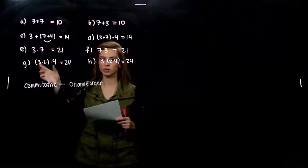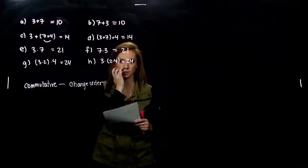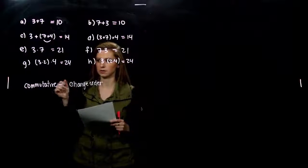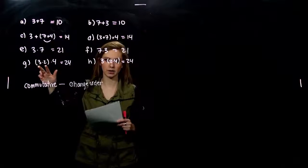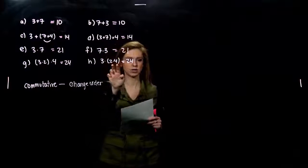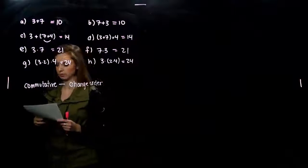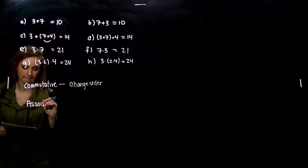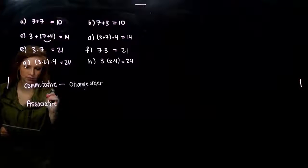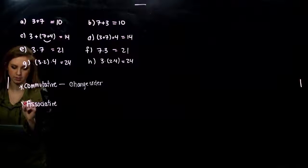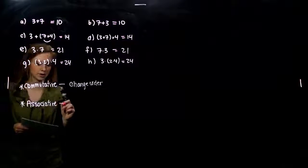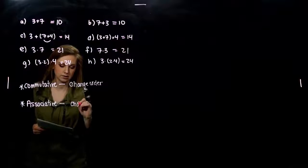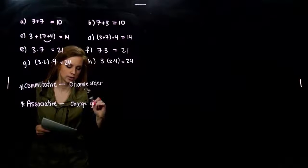We can also associate different values together to happen first. So in this case, we associated three and two together. We associated two and four together. So we can change the groupings. So the associative, again, you need to know these two terms. Commutative, associative. They're very important in math. We can, layman's terms, change the groupings.